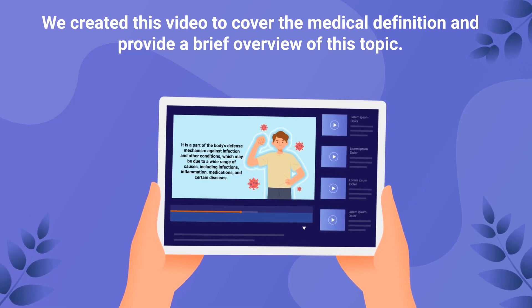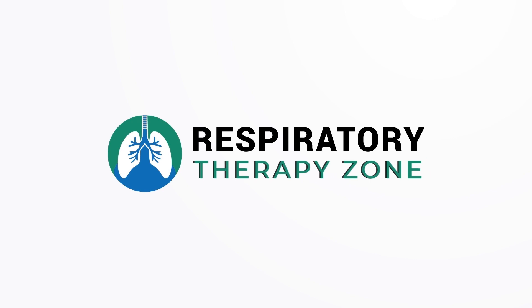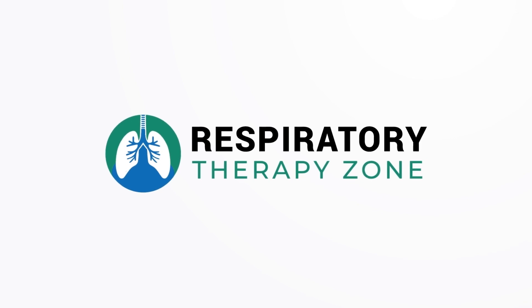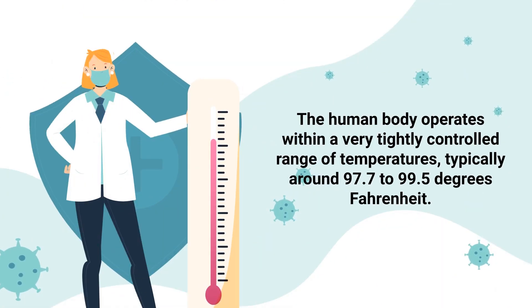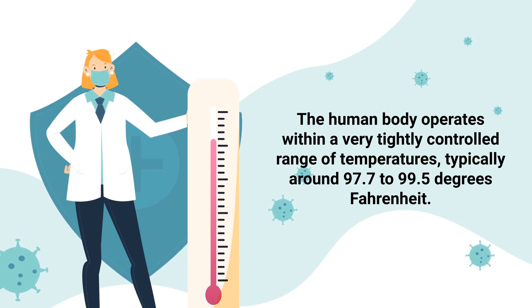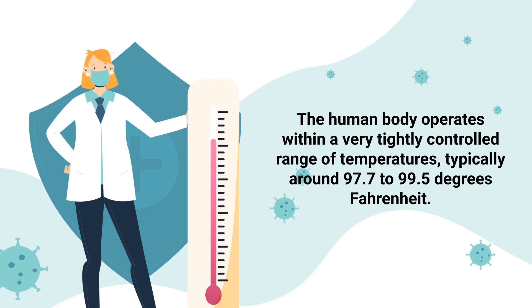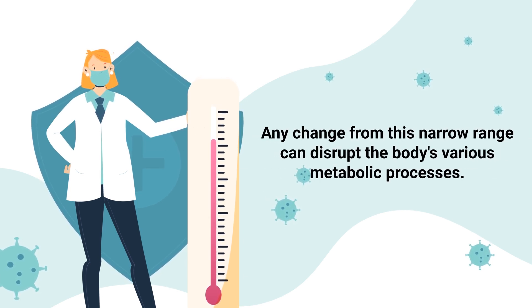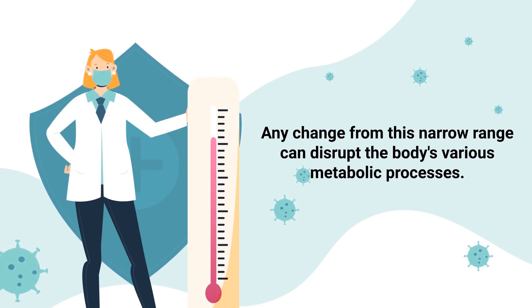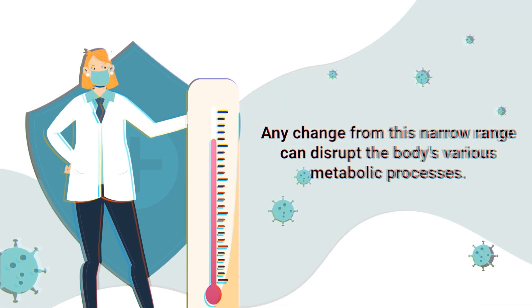The human body operates within a very tightly controlled range of temperatures, typically around 97.7 to 99.5 degrees Fahrenheit. Any change from this narrow range can disrupt the body's various metabolic processes.